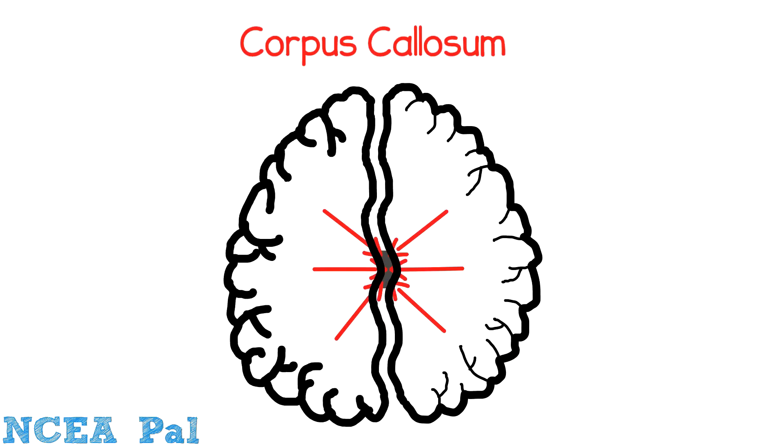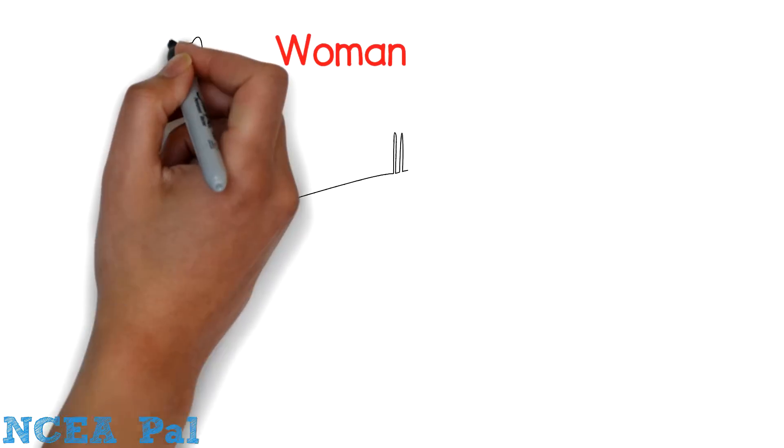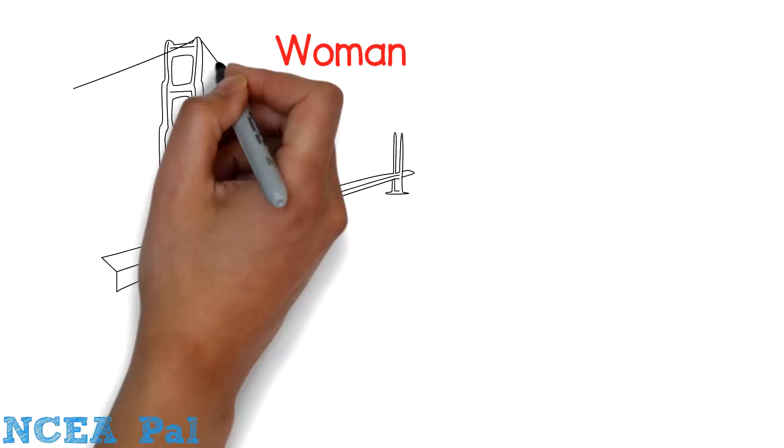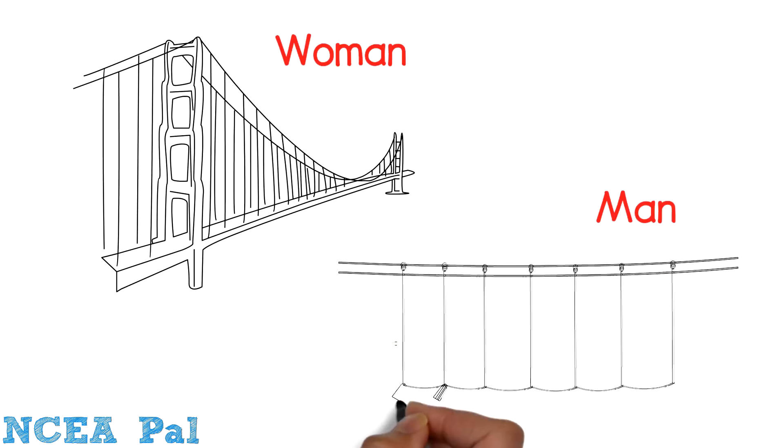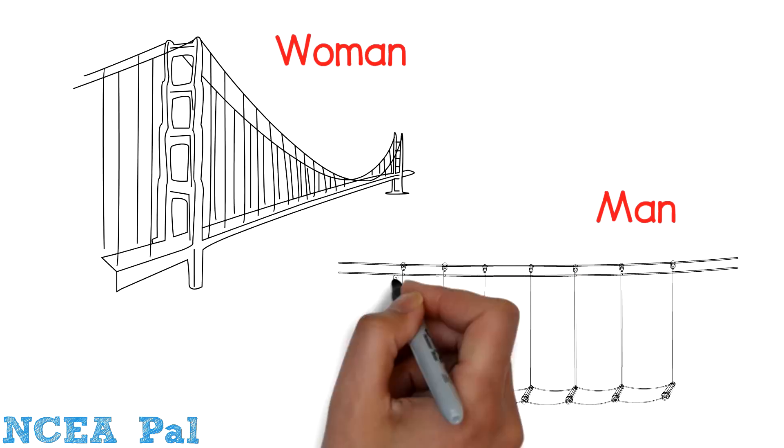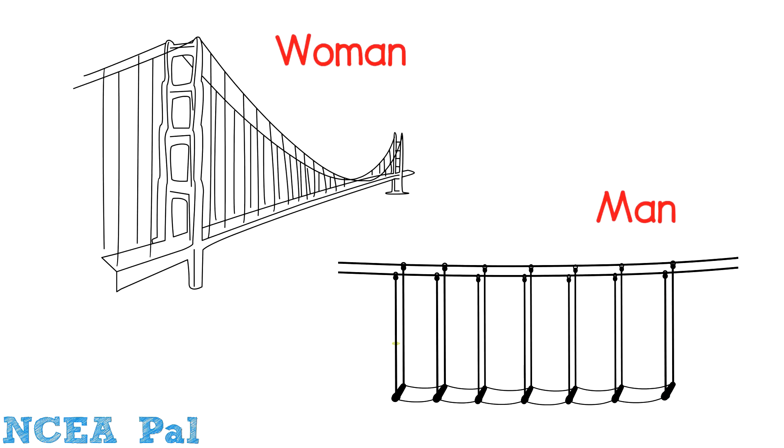Now that's even thinner in a man than it is in a woman. If you think of it as a bridge, a woman's got a fairly sturdy six lane highway, a man has the equivalent of a swing bridge, which means that taking in all the information really puts it under strain.